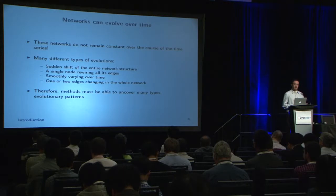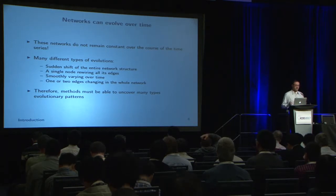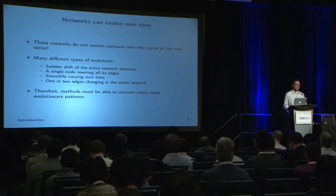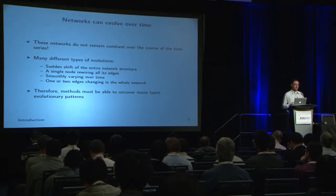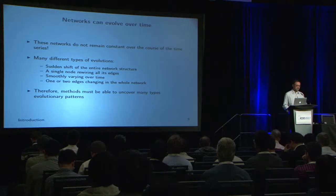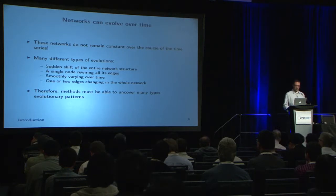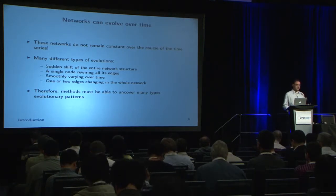Across a time series, these correlation networks evolve over time, and there's not just one type of network evolution. You can have global restructuring occasionally, where the network remains constant then an event causes the entire system to change. You might have a single node rewiring all its edges — a local shift — while leaving the rest of the network unperturbed. Or networks can smoothly vary over time, with only one or two edges changing at any given timestamp.